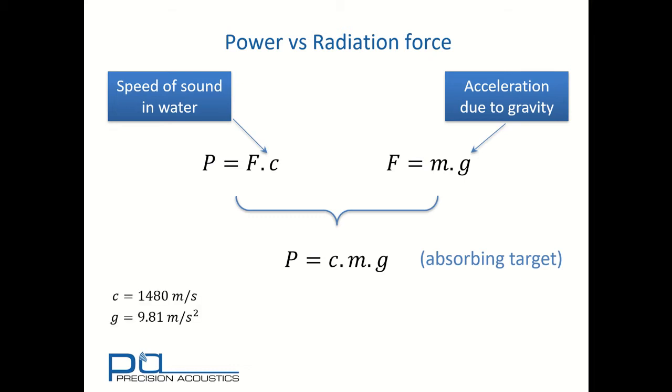For typical values of speed of sound in water of 1418 meters per second and acceleration due to gravity of 9.81 meters per second squared, we find that the conversion factor between effective mass and power is only 68.9 milligrams per watt. Therefore, if we're to measure powers below 10 milliwatts, we need to be able to effectively measure masses below one microgram. This requires highly accurate microbalances.